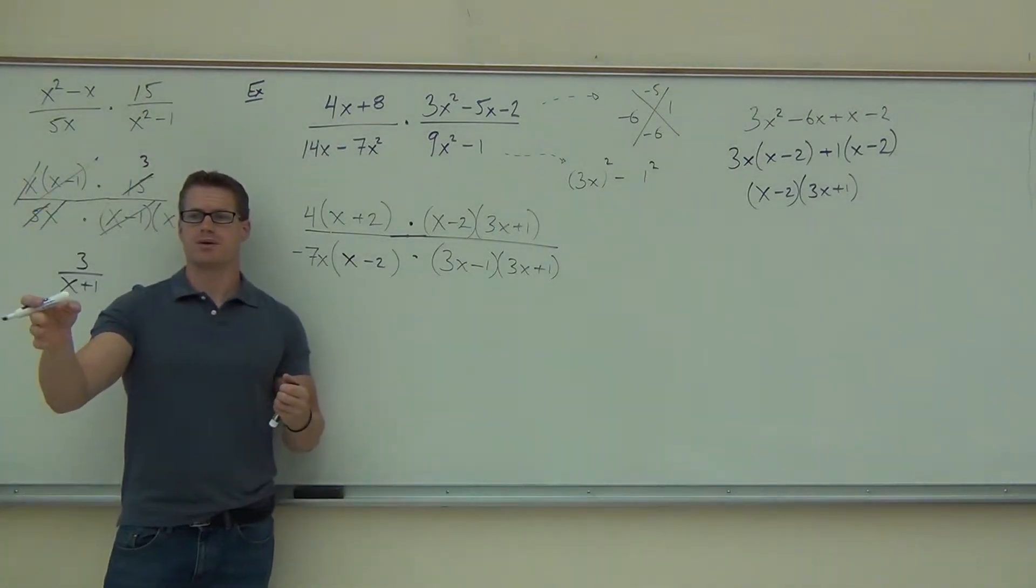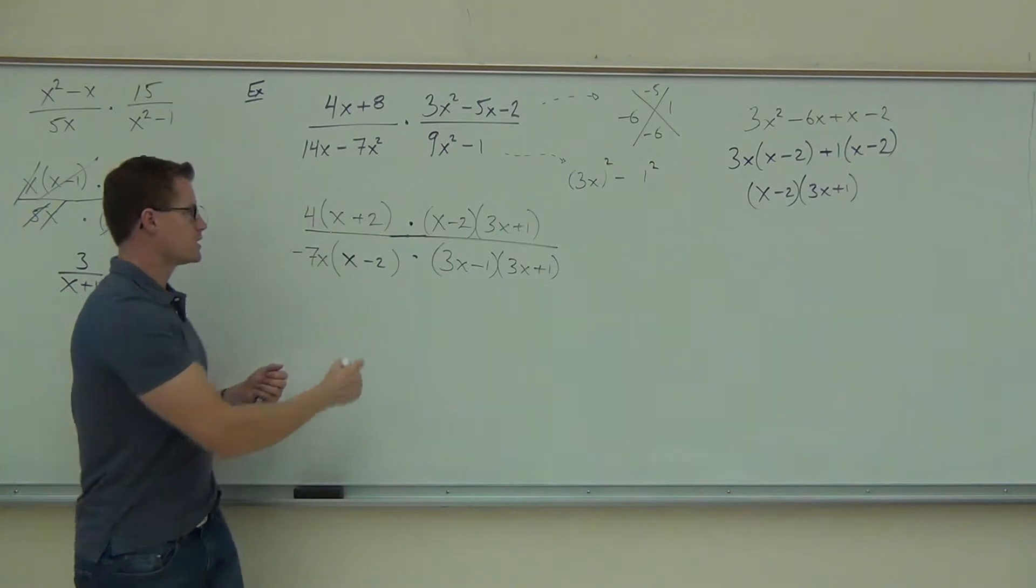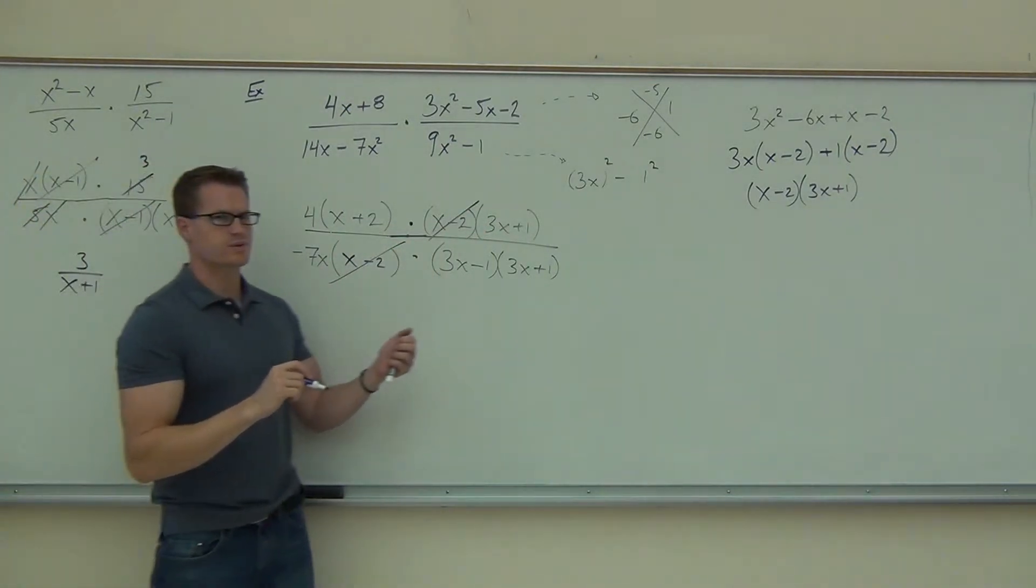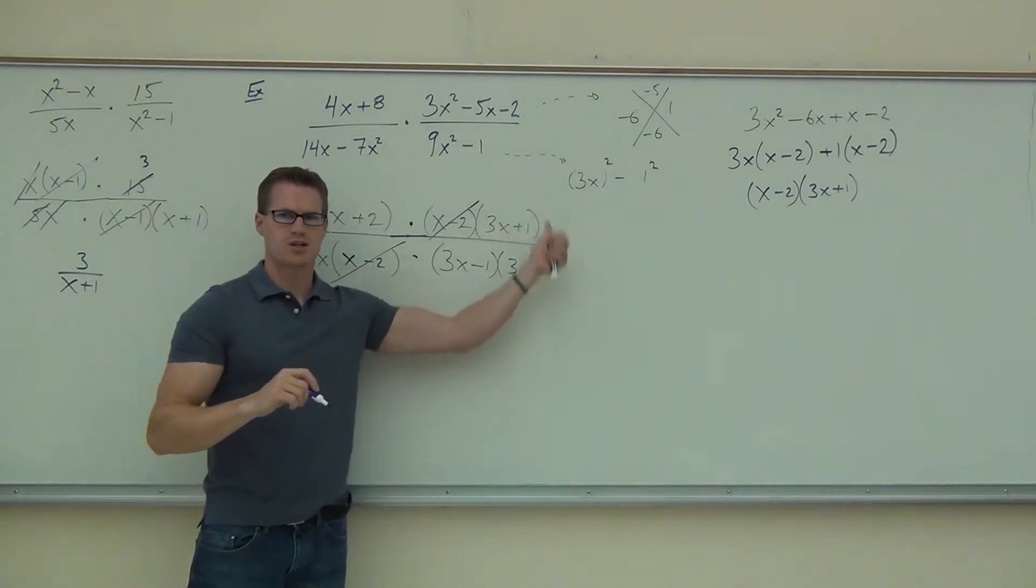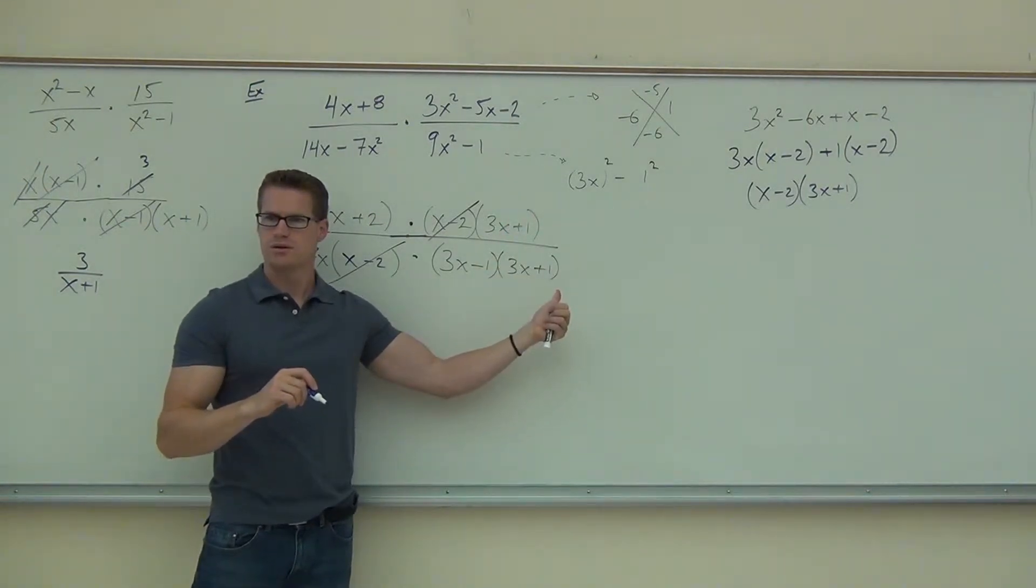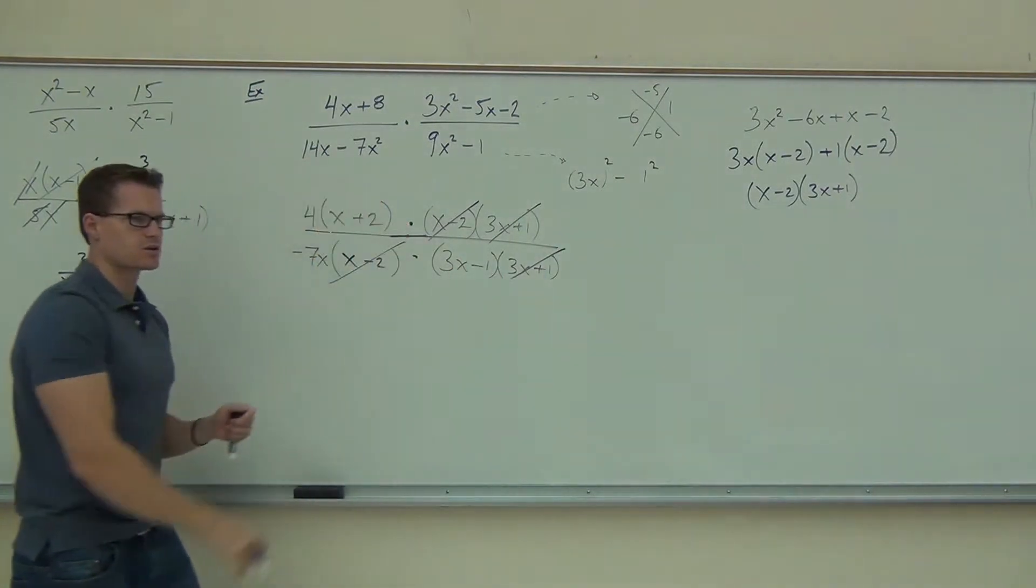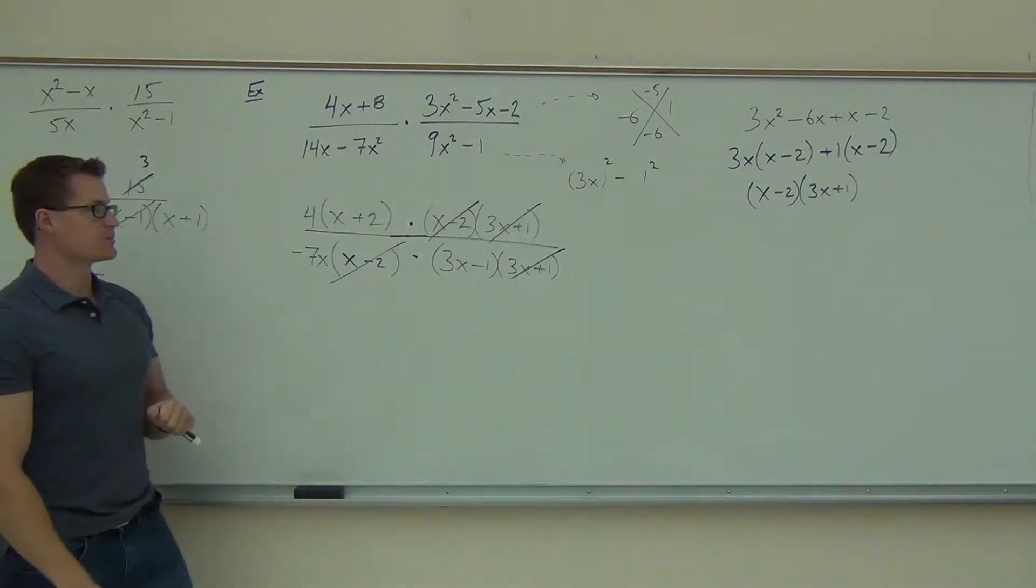Shout out some things that we can simplify up here. X minus 2. Okay, someone else give me something else we can simplify up here. 3x plus 1. Great. Wait a second. Even though I'm in the same fraction, I can still simplify those? Sure, why not? Yeah, you're just looking for common factors. It doesn't really matter. It doesn't have to be across from each other. Is there anything else we can simplify up here?